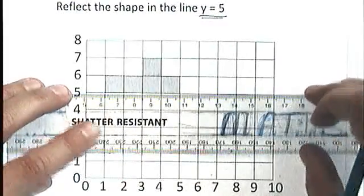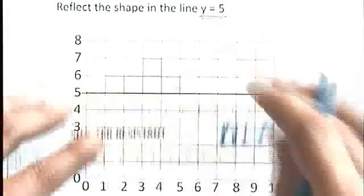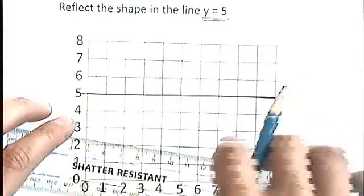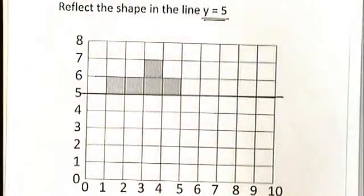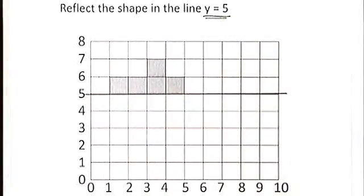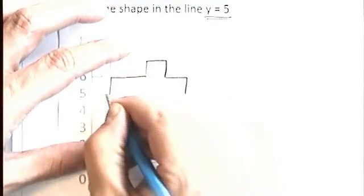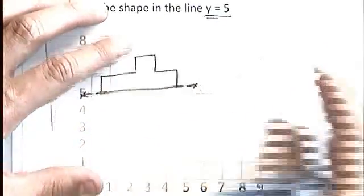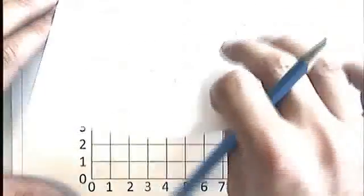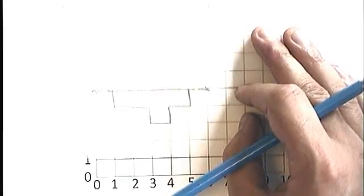So my line, my mirror line is this one here. There we are. I hope you can see that. And what I'm going to do is I'm going to reflect this shape using that line. Now once again, I can use a piece of tracing paper. I'll put a couple of points on there for my line of reflection. And then all I'm going to do is flip my piece of tracing paper over. And that's the position in which the answer needs to go.